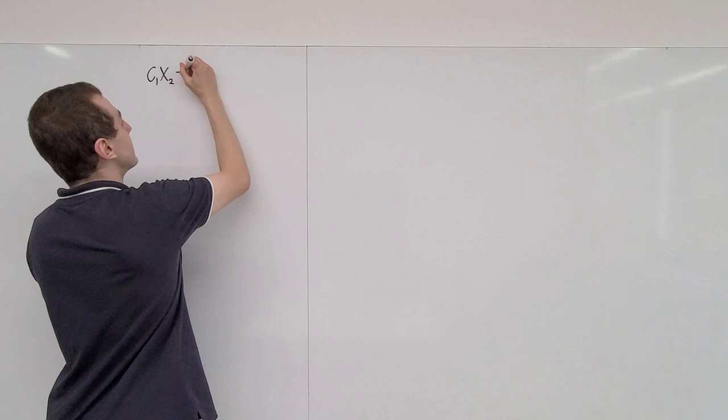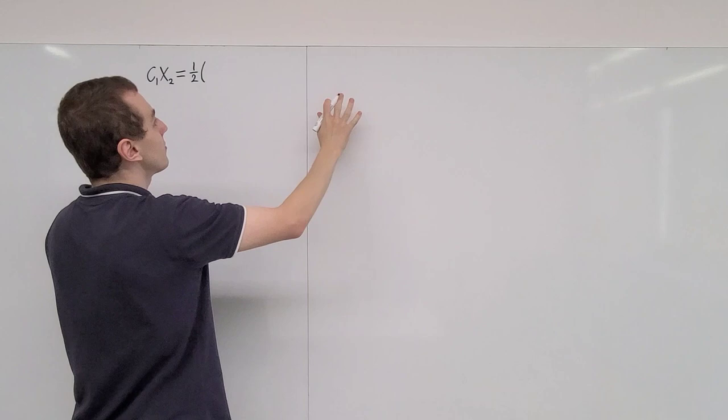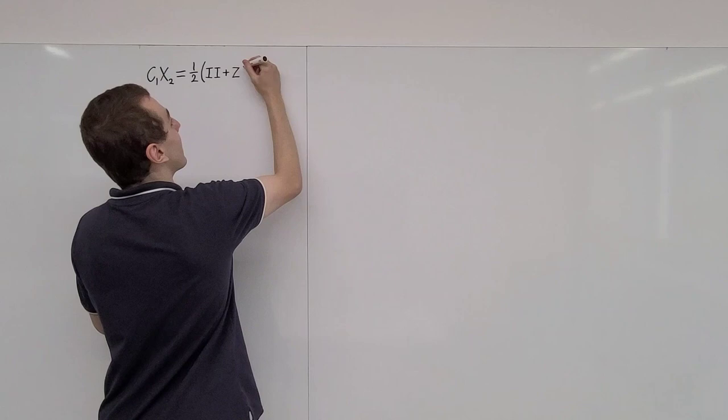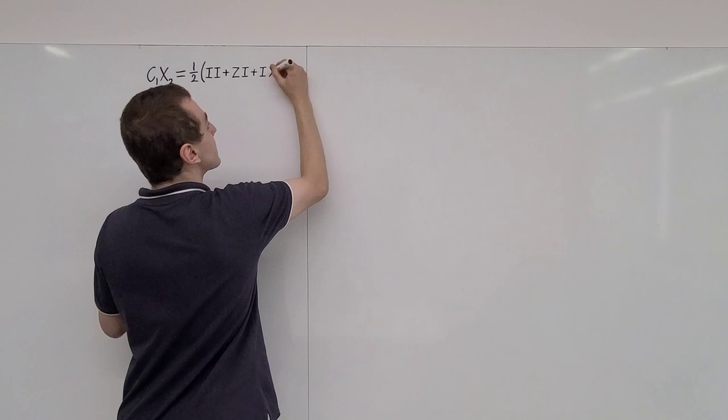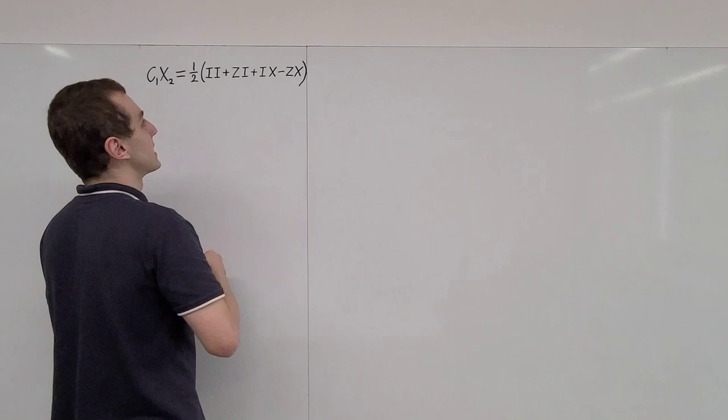Let's have a look at this ordering. We have qubit 1 and then qubit 2. This can be represented in terms of Pauli matrix tensor products. We're going to have a coefficient of one-half, and the terms we're going to have are just four terms. First, identity tensor product with identity, then Z tensor identity, then identity tensor X, minus Z tensor X. These four terms are the only non-zero contributions; all other terms have coefficients of zero.